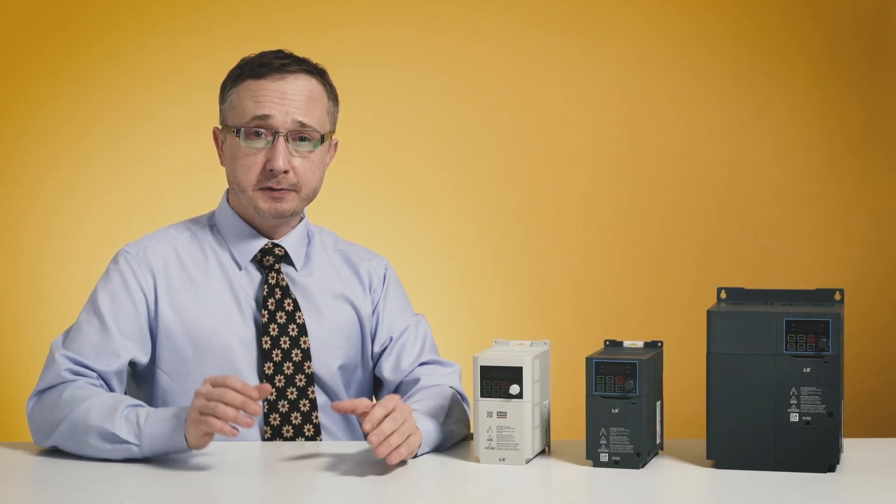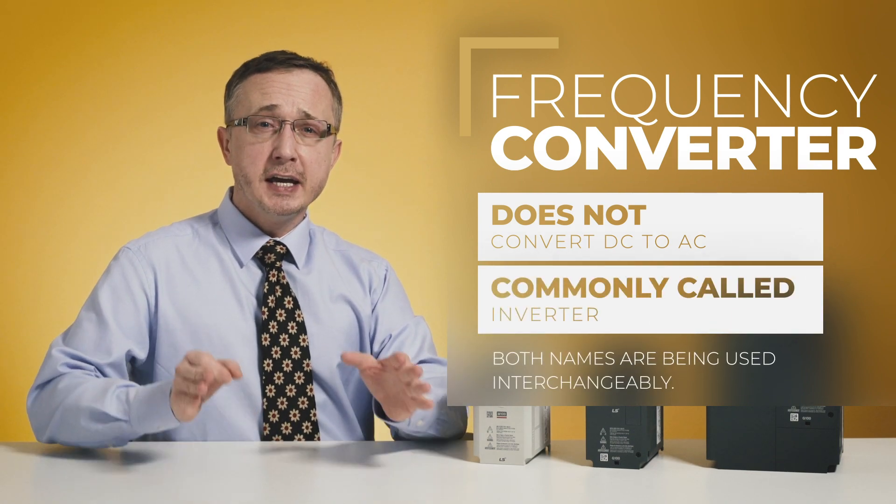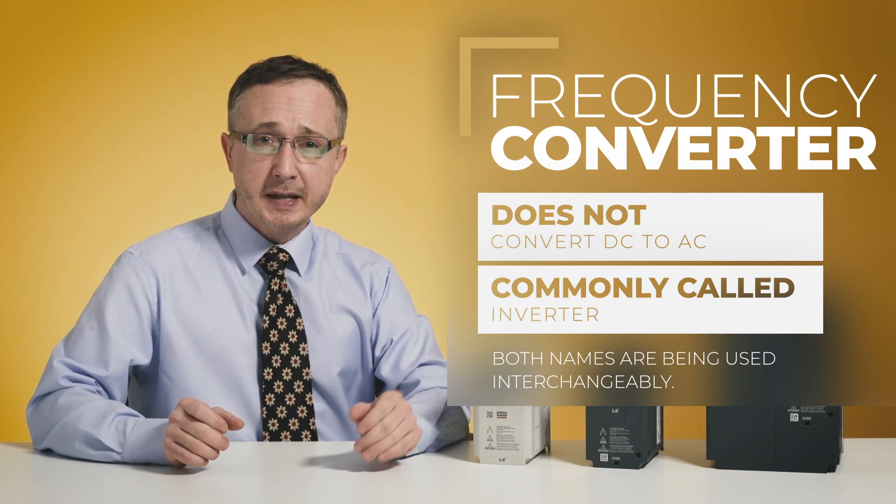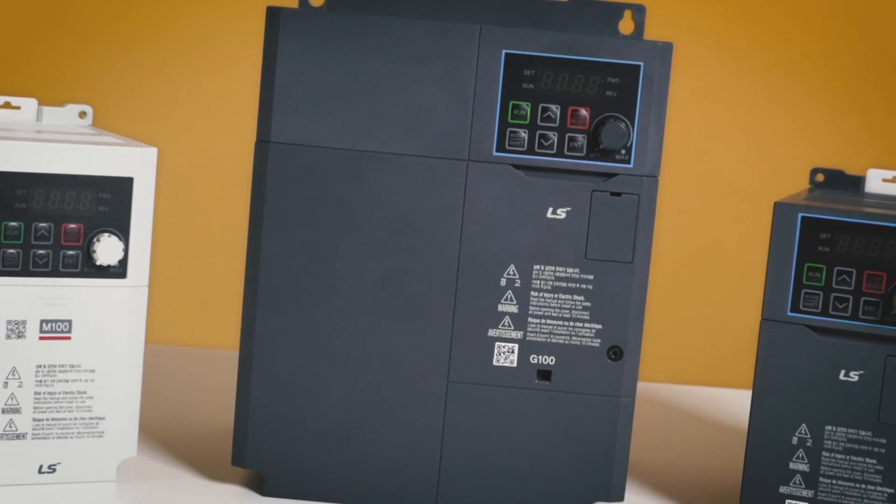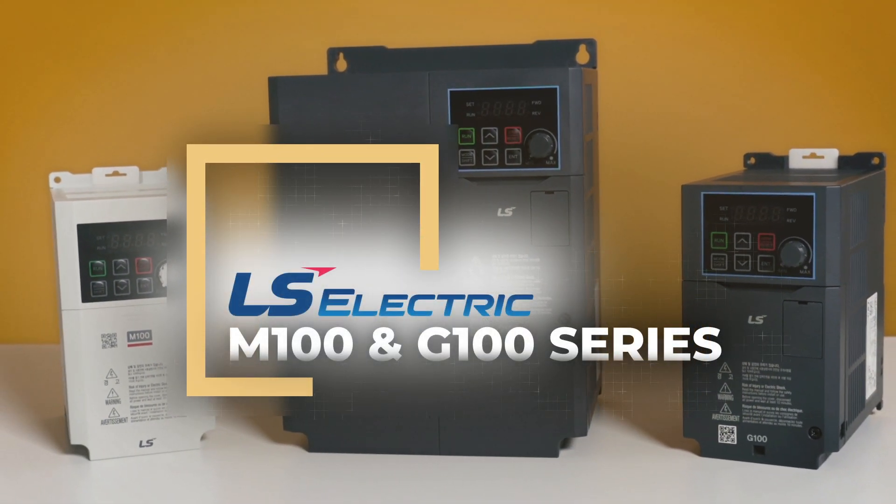On the other hand, a frequency converter is perceived as a device that changes AC frequency and voltage in order to regulate the rotational speed and torque of an induction motor that drives the machine. Nevertheless, on the automation market and in trade, frequency converters are commonly called inverters, so there is wide consent to use these names interchangeably.